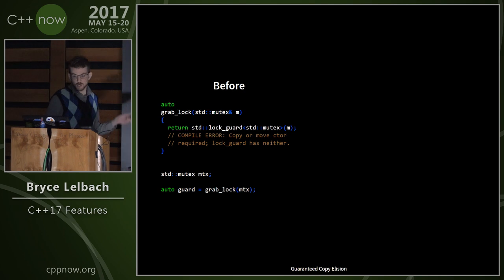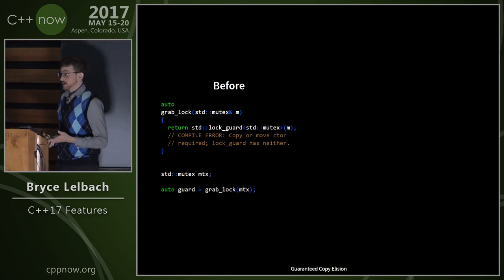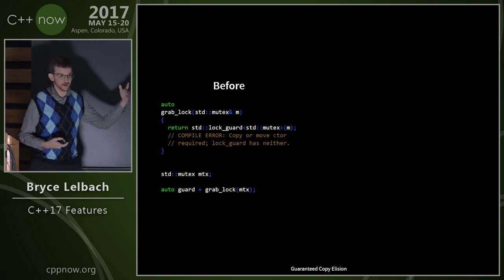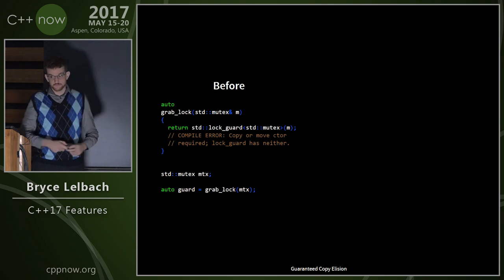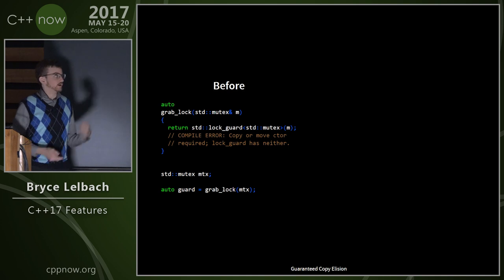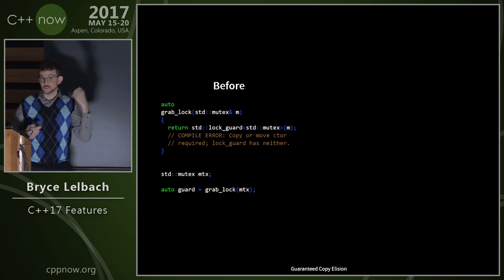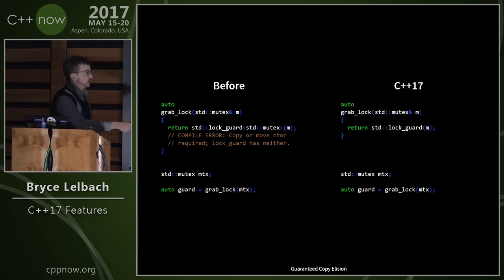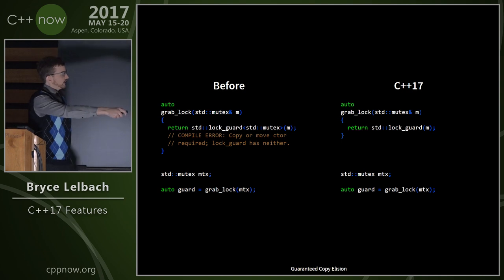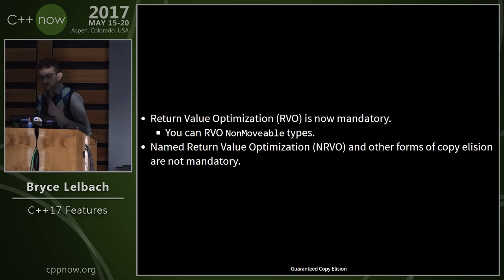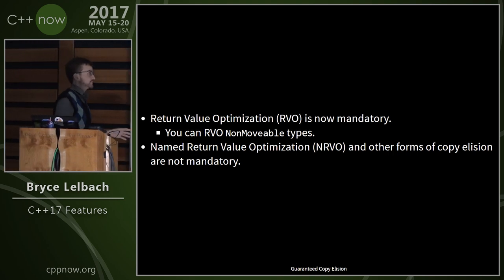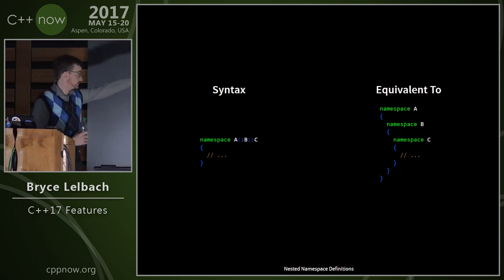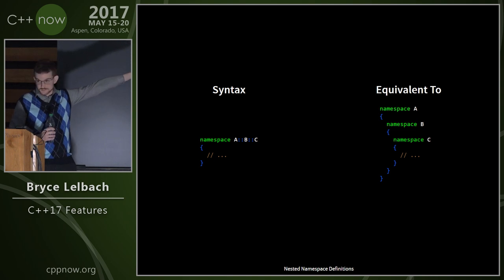Guaranteed copy elision: before C++17, pretty much every compiler implemented return value optimization, but it wasn't required. Because it wasn't required, you couldn't write a factory function relying on RVO if the returned type is non-movable — the compiler still needed to check for a move or copy constructor. In C++17, return value optimization is now mandatory. You can RVO non-movable types, like returning a lock_guard from a grab_lock function. Named return value optimization and other forms of copy elision are not mandatory. Also new: nested namespace syntax — you can now declare nested namespaces inline with colons.